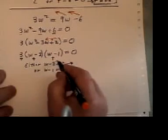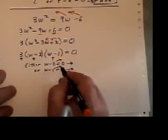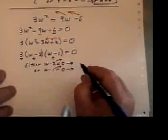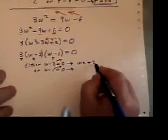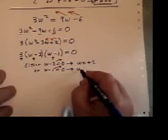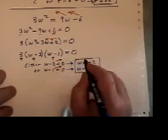And now I end up with my two little simple equations to solve. In this one I'm going to take minus 2 to the other side and in this one I'll take minus 1 to the other side. And that leaves me my answer is w equals plus 2 or w equals plus 1. So there are the two answers to the question.